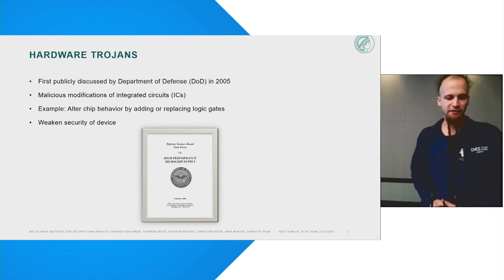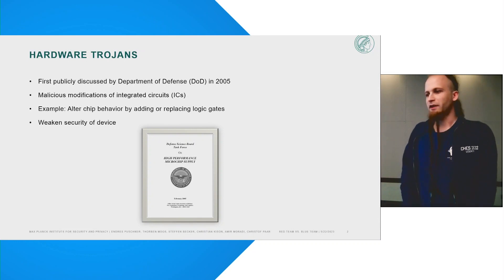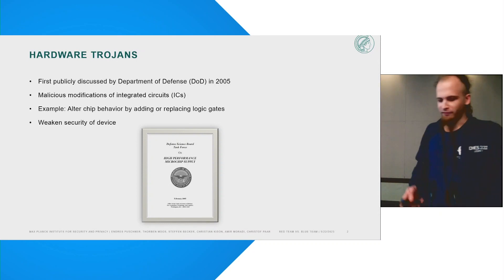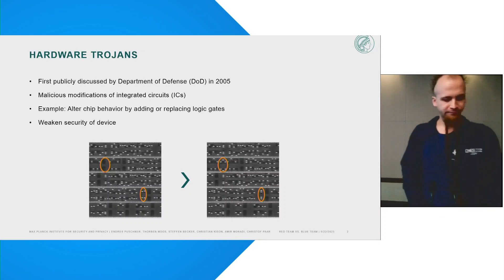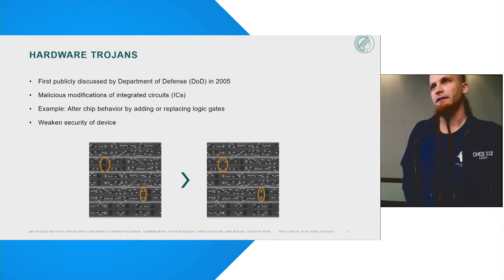Starting off, I'll explain some background of Hardware Trojans. Hardware Trojans in general are malicious modifications in integrated circuits. The term was first introduced by the Department of Defense report on high performance microchip supply in 2005. Hardware Trojans could be introduced during manufacturing or even shipping of ICs, and one noteworthy example of those modifications are either added or replaced logic cells just before manufacturing. This can undermine the security, integrity, trustworthiness, and availability of whole devices. The Department of Defense was specifically worried about manipulations in military grade hardware.